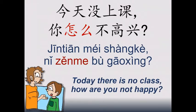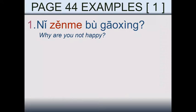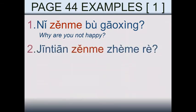Let's see some other examples. On page number 44, we have the first one: 你怎么不高兴？ — Why are you not happy? Sometimes we're going to translate zěnme into English not as 'how' but as 'why.' The second example: 今天怎么这么热？ — How is it so hot today?